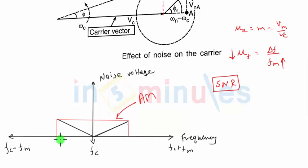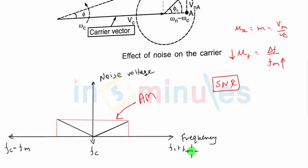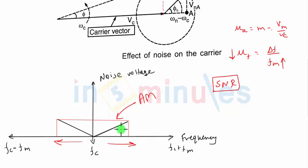In simple words, SNR will decrease as modulating frequency increases. When I show the noise voltage with respect to frequency, it simply means that the noise voltage increases as the frequency increases on both sides of carrier frequency FC. That corresponds to increasing FM — so as FM increases and as we go towards FC minus FM and FC plus FM, you can see the noise voltage will increase.